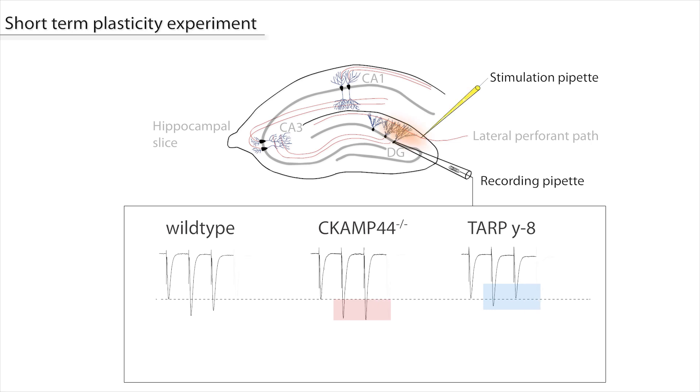deletion of CKAMP44 leads to a cumulative facilitation of AMPA receptor responses, whereas deletion of TARP-γ8 leads to a depression compared to wild-type mice. Both proteins therefore display an opposing influence on short-term plasticity.